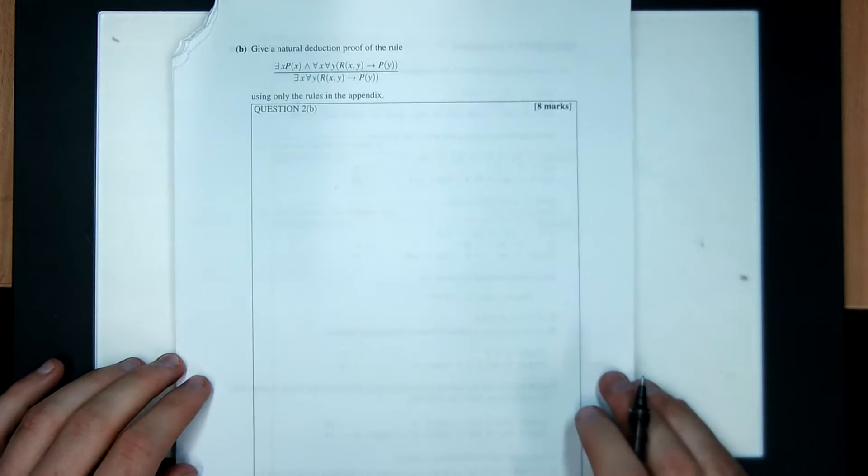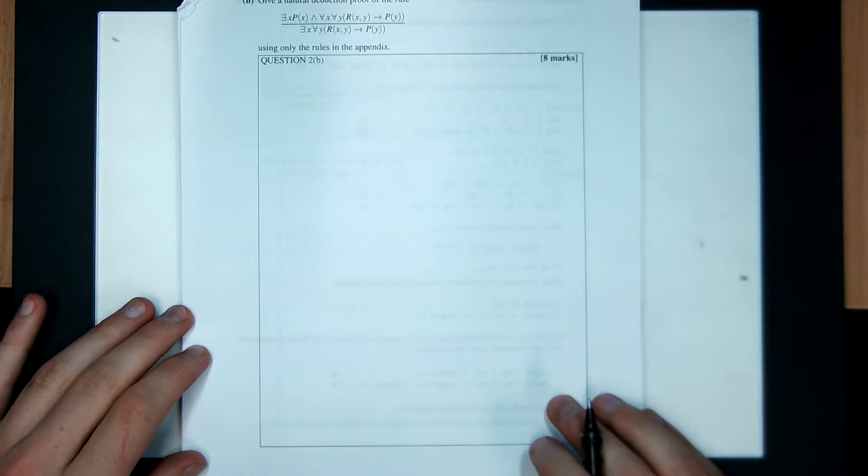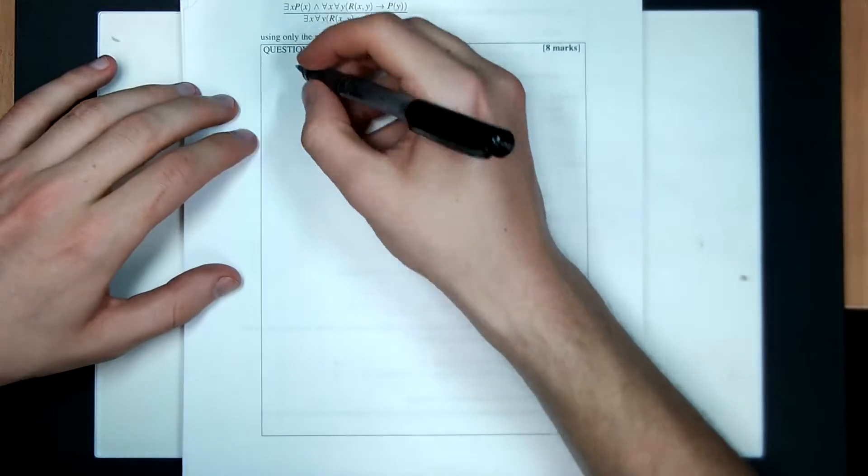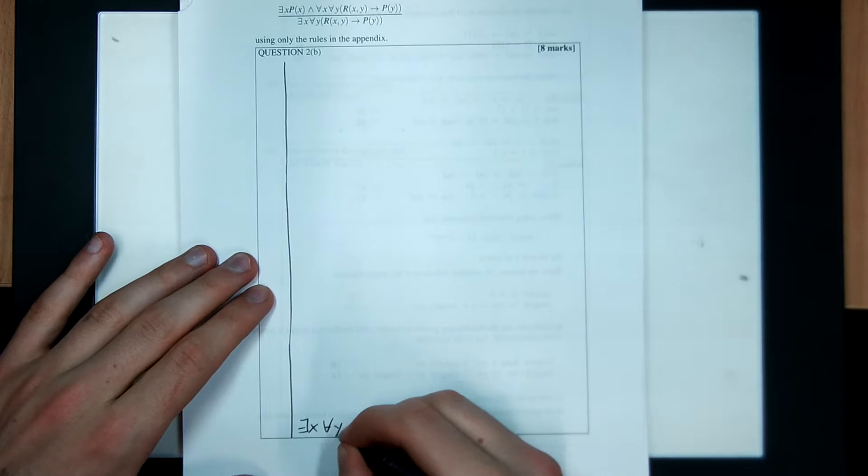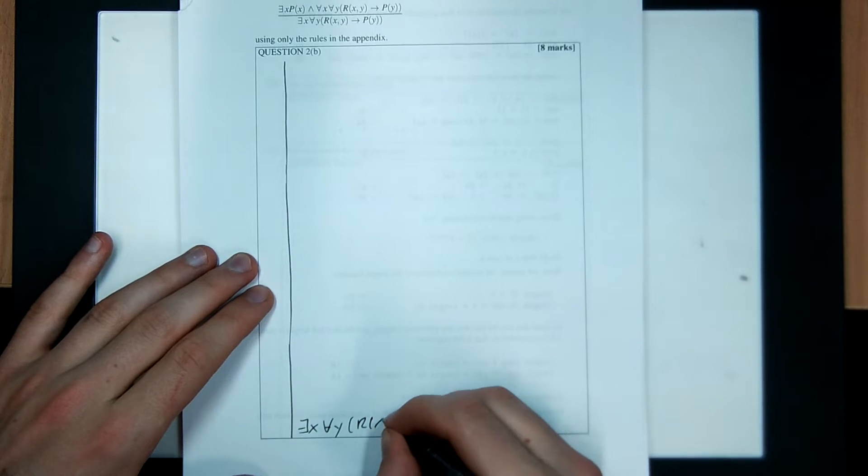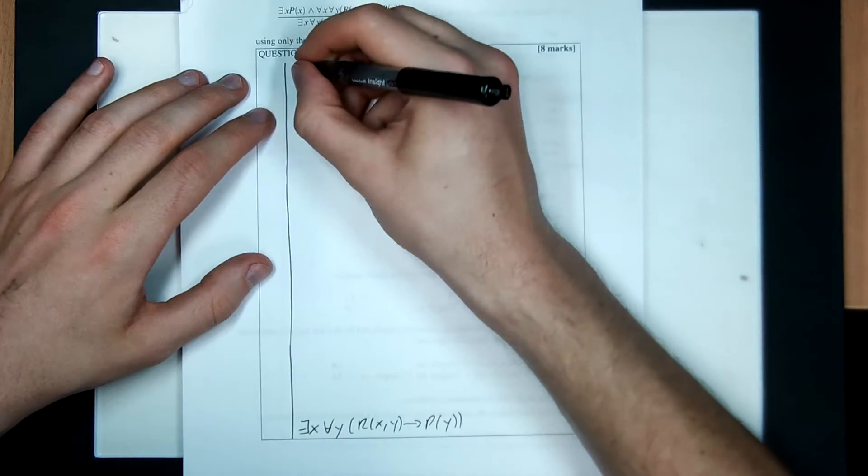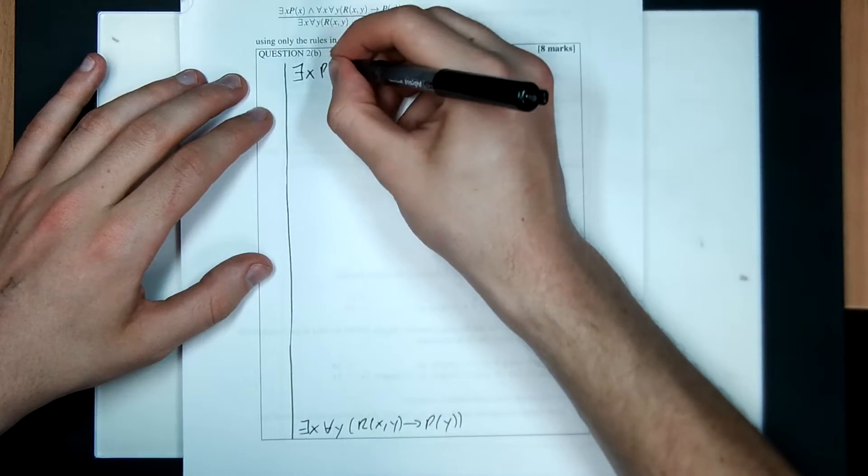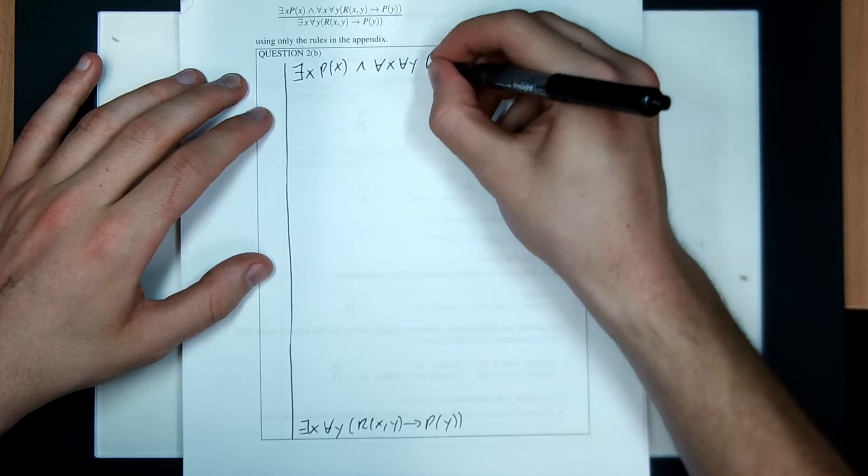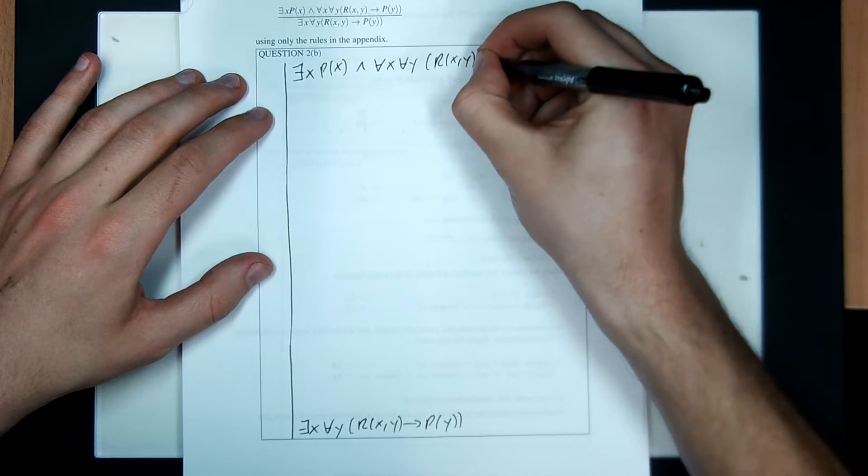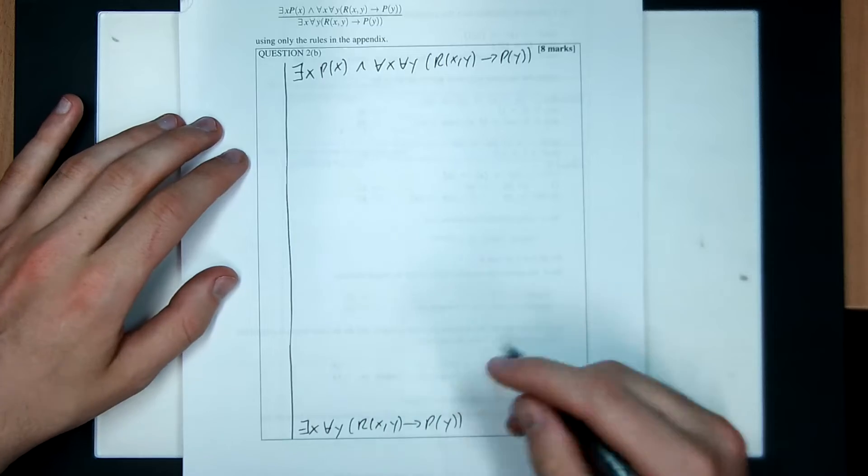What's the next part? Given natural deduction, proof of the following rule. Okay. So, I guess I do my usual thing. I put the thing I want at the very bottom. Exists X, for all Y, R(X,Y) implies P(Y). And I put the thing I'm given at the very top. Exists X, P(X). And for all X, for all Y, R(X,Y) implies P(Y). That's the sum I get from here down to there.